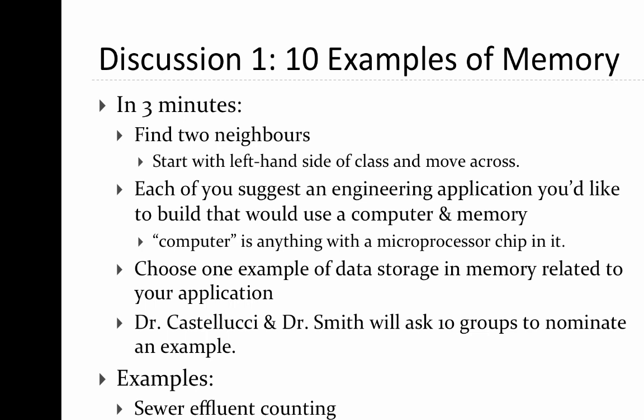Now we're going to break up into groups of three within the class. Starting from the left-hand side, gather in each row in groups of three, and discuss over the next 3 to 5 minutes how each of you has an interest in developing an engineering application that would use a computer microprocessor and memory. This could be a final year project or something for a future company. Each group should choose one idea to nominate to the rest of the class.